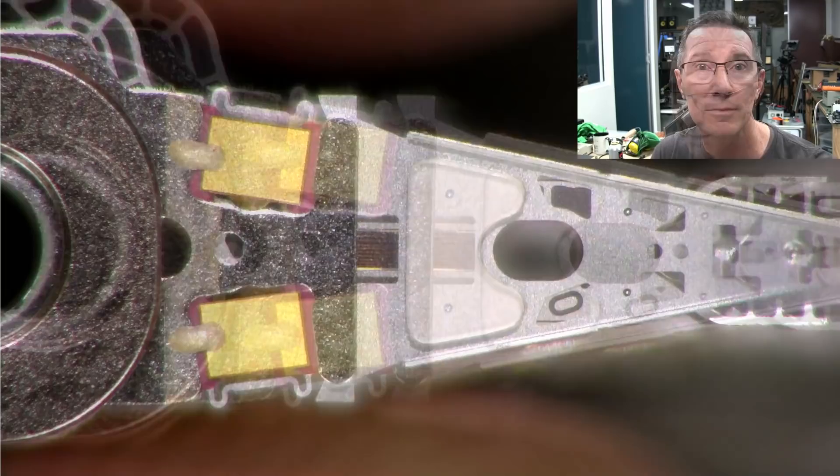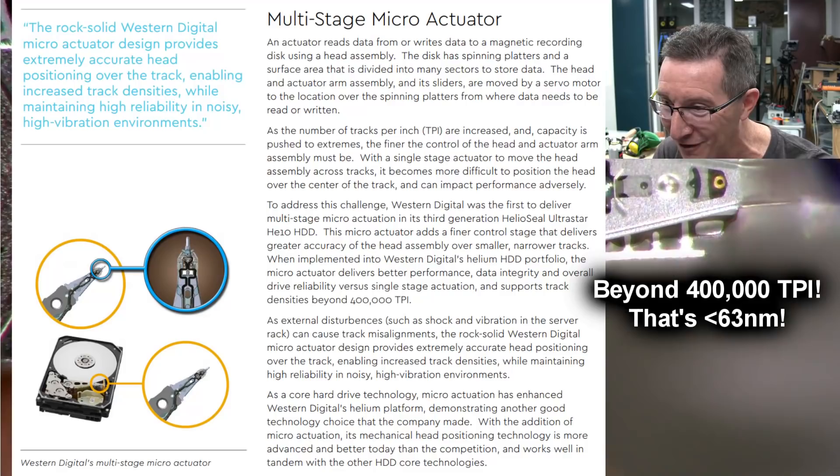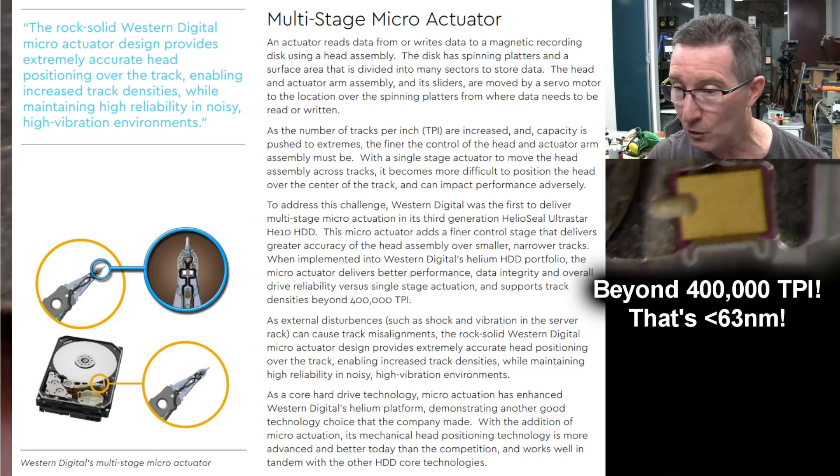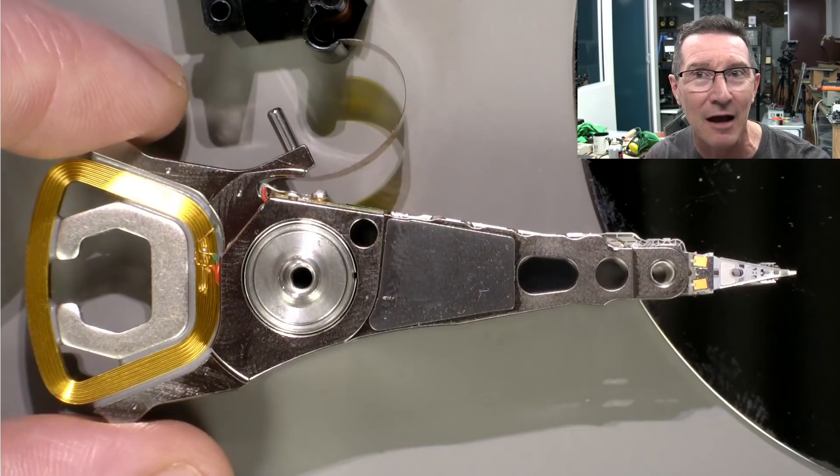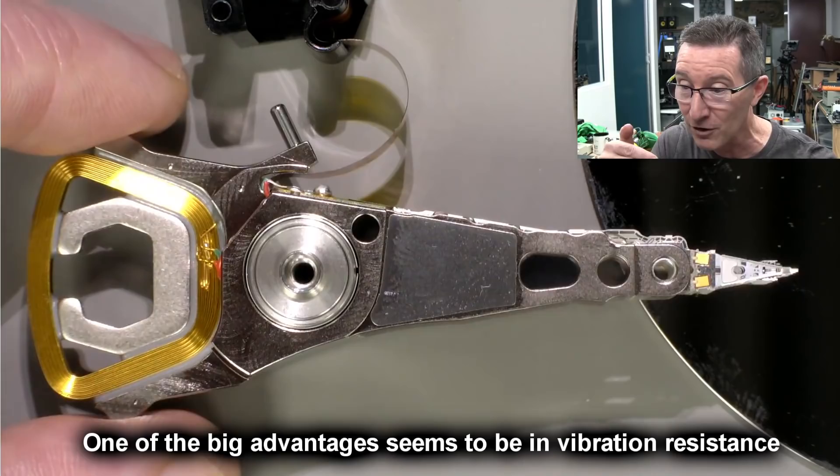So this is actually called dual stage actuation. We can microposition the head. I'm not sure how far it can actually move like this. It only has to be a tiny amount. So what you can do with this is that let's say you want to seek to track 10 or something like that, then you excite this actuator coil over here and boom, it goes over there and it's near enough to track 10. It might be plus or minus a couple of tracks. But then instead of trying to correct it back, instead of trying to use this large actuator coil over here to try and micro-correct it, you can actually do it much faster using these piezo actuators.